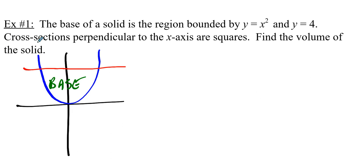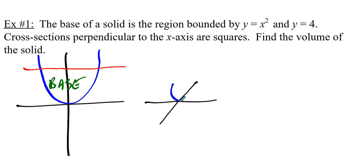Cross sections perpendicular to the x-axis are squares. We imagine that this base region is sitting on a tabletop, and if we slice perpendicular to the x-axis, what comes off the table is a square.